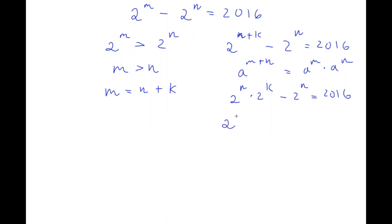So now I have 2 to the power of n times — 2 to the power of k divided by 2 to the power of n is just 2 to the power of k, minus 2 to the power of n divided by 2 to the power of n is 1 — and this equals 2016. So now I have 2 to the power of n times 2 to the power of k minus 1, is equal to 2016.